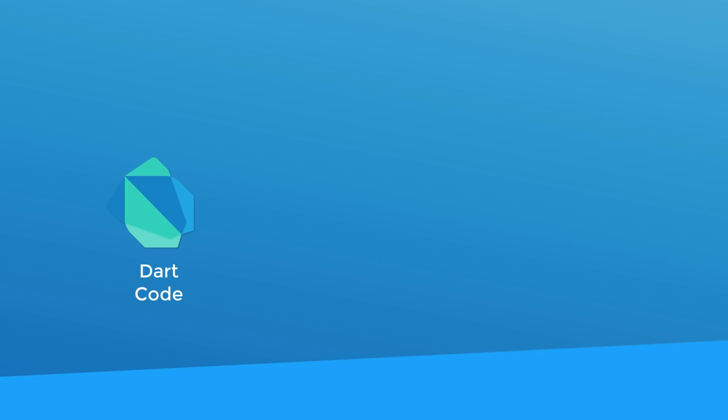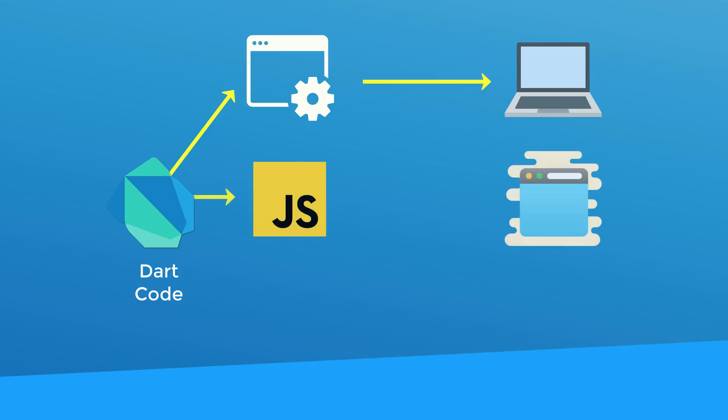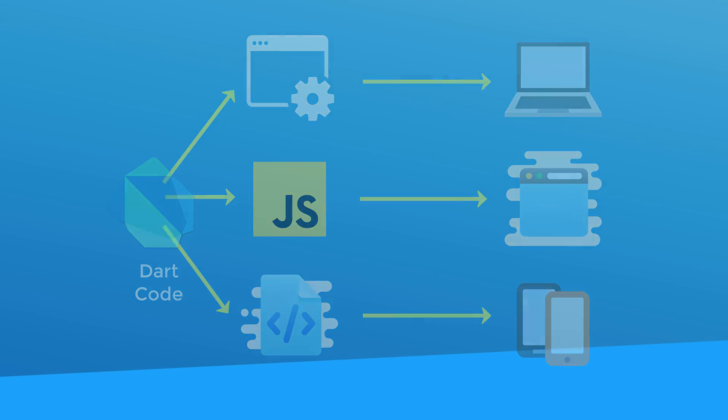Dart is a relatively new programming language developed by Google. Described as a client-optimized language for building fast apps, you can build apps on mobile, on desktop, and even for backend. There are multiple ways to use Dart. For example, Dart comes with a Dart virtual machine, which allows computers to execute Dart code. Or you can convert your Dart code to JavaScript and use it wherever you can use JavaScript. Or you can compile your Dart code to native code for running on Android and iOS. It's pretty versatile.